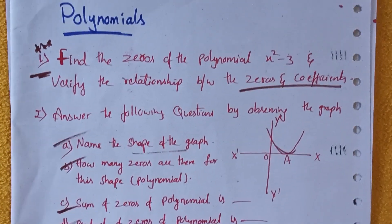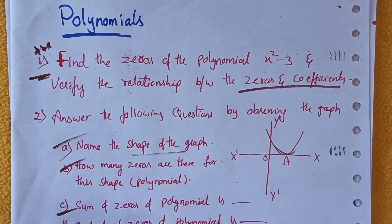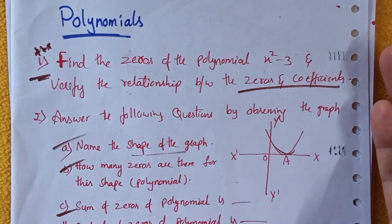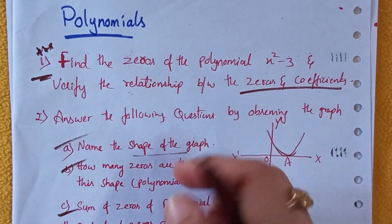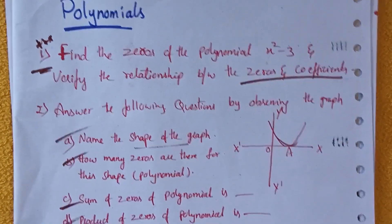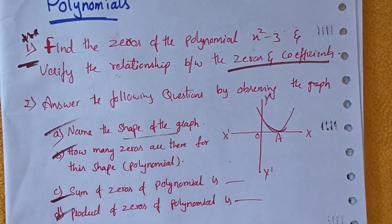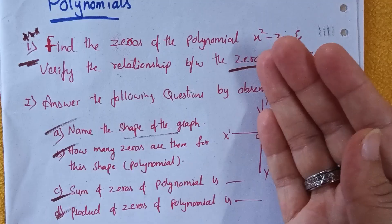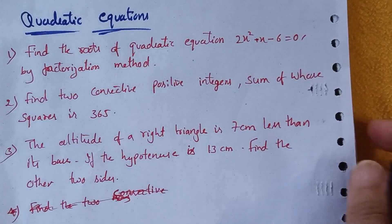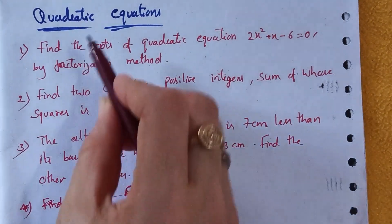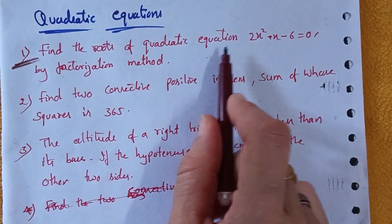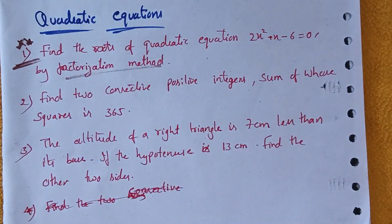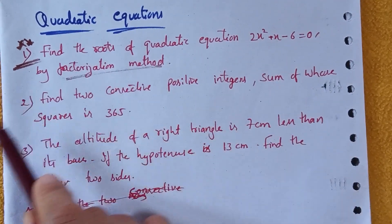For slow learners, please go through each and every question I am discussing. More than average students should go through the rest of the textbook and exercise questions as well. This is last-minute preparation, so I am picking the most important questions. Next chapter is Quadratic Equations. The first question: find the roots of 2x² + x − 6 = 0 by factorization method. The equation may change but the method remains the same.